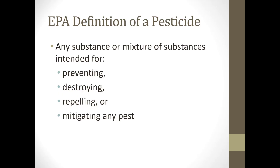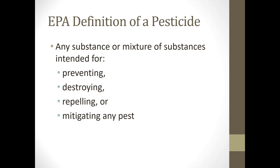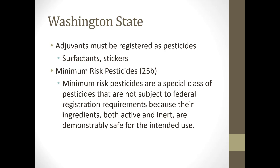The EPA definition of a pesticide is any substance or mixture of substances intended for preventing, destroying, repelling, or mitigating any pest. Under US law, a pesticide is also any substance or mixture of substances intended for use as a plant regulator, defoliant, or desiccant. The overall law is always going to be US law, and then state by state may take it further — in Washington state, surfactants and stickers must be registered as pesticides as well.